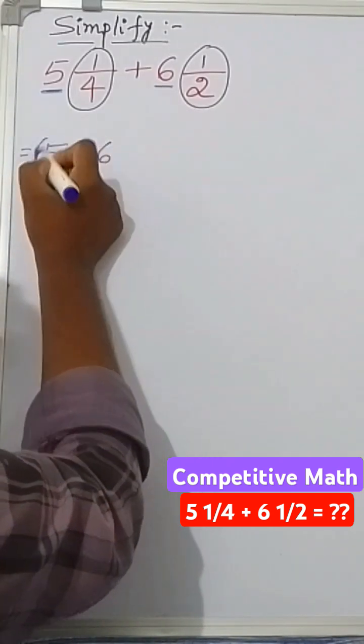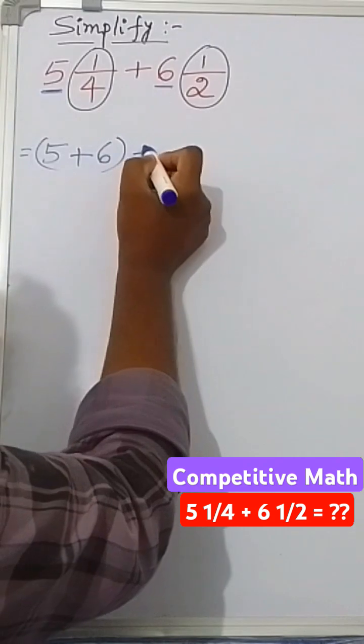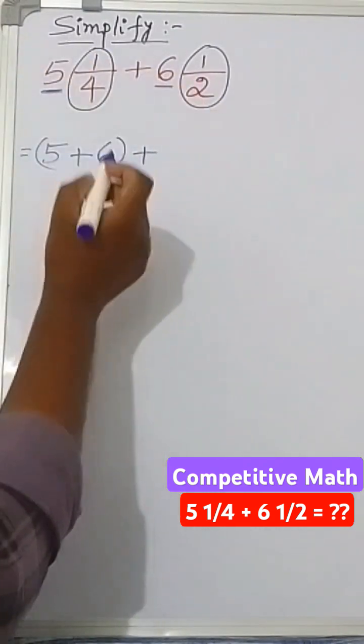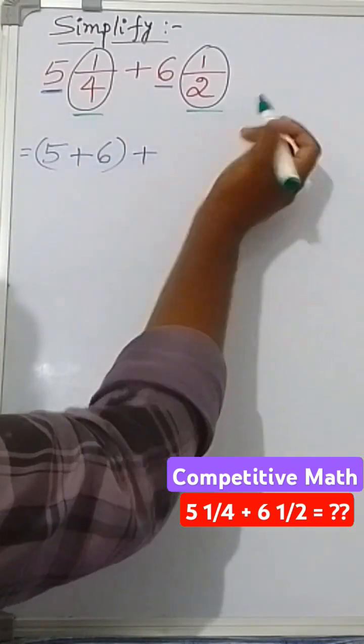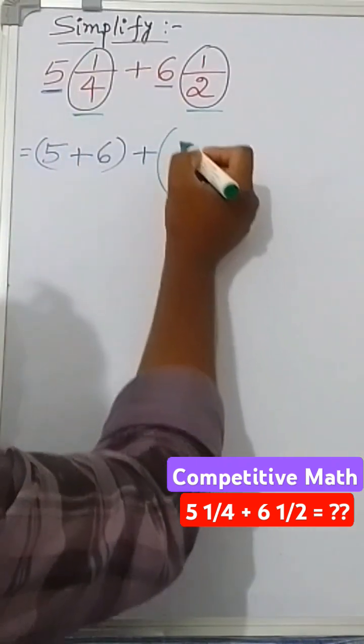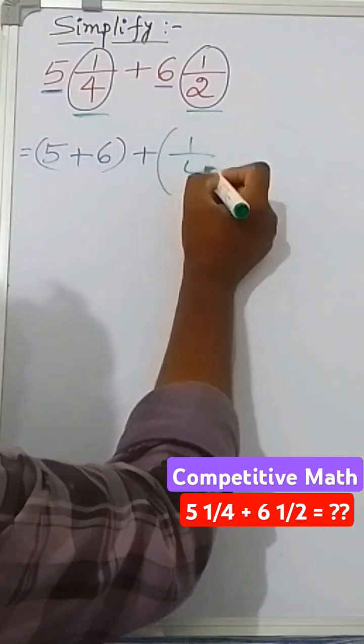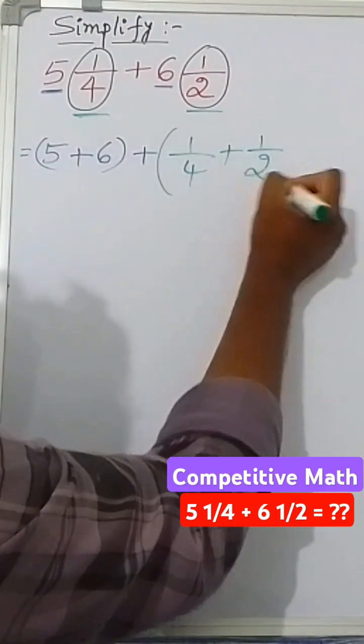Then plus, you add the fraction parts separately like this: 1/4 plus 1/2.